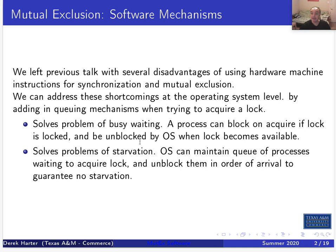We can address these shortcomings with the operating system. The OS can block the process instead of having a busy wait if it wants to enter a critical section that's already locked. Similarly, just like the OS keeps a ready queue for processes waiting to run using round-robin scheduling for fairness, it can keep a queue for processes waiting to enter a critical section and round-robin them to ensure every process gets a chance.